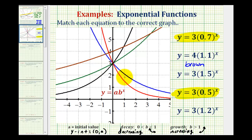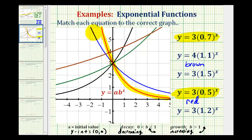Looking at our graphs, there are only two that represent exponential decay: the blue function and the red function. Notice the red function is decreasing faster — it's steeper going downhill from left to right — which means the red graph has a smaller value of b. The closer b is to zero, the faster it decreases. So the red graph corresponds to b equal to 0.5, and the blue graph corresponds to b equal to 0.7.